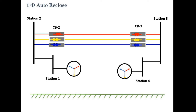Here we have considered two stations — Station 2 and Station 3 — mainly. Station 2 is connected to Station 1, which is also connected to a generating station. Similarly, Station 3 is connected to Station 4, which is again connected to a generating station. So there are two separate systems connected to each other from Station 2 to Station 3 by transmission lines indicated in colors — R, Y, and B.